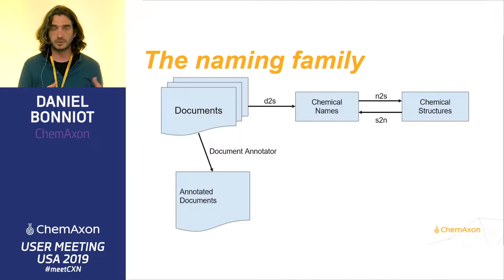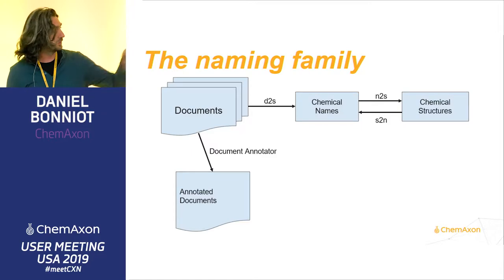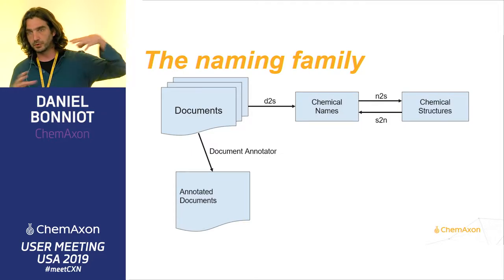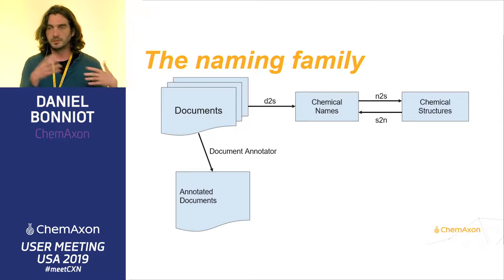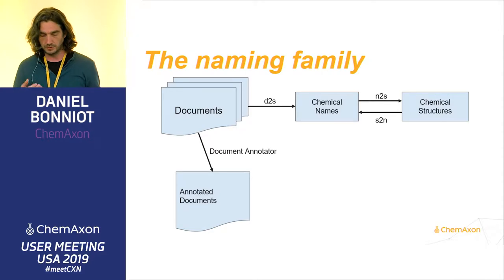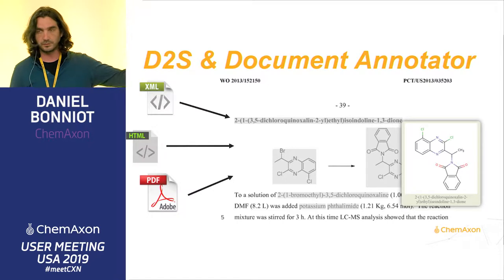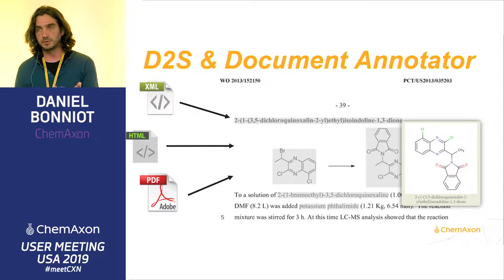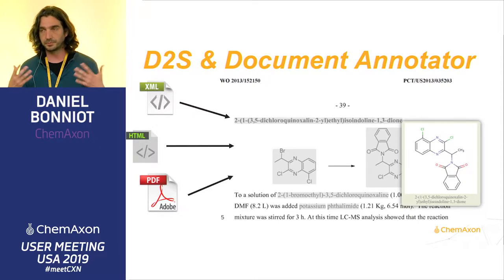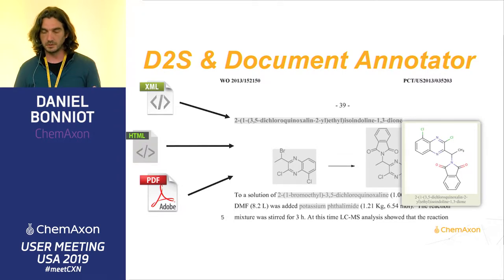The name could be either a systematic IUPAC name or a common name. And another process we can do is, given a document, produce another document where we found all the chemistry — based on names or images — and annotate that document with the information we found. As you can see in this screenshot, on the left you have documents which could be in various formats. Here we find a IUPAC name and also images using a third-party optical structure recognition tool. In this case, we give you an HTML file that adds all this chemical information to the document.